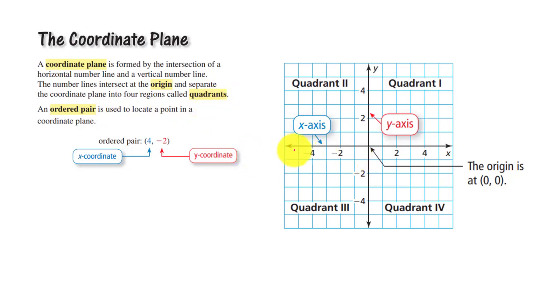Here is horizontal number line and this is vertical number line. These two lines intersect here. So this is called origin. These two lines separate entire plane into four regions. That means first, second, third and fourth region. Each region is called quadrant.